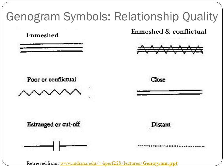Keep in mind that one of the things you're going to do when you write your paper is describe why these relationship qualities were depicted on the map. Explain to me why two people are enmeshed in your opinion, why they're conflictual, why they're estranged or cut off, and so on.